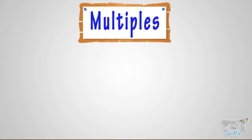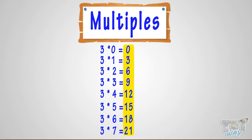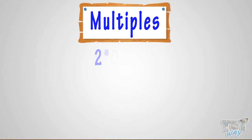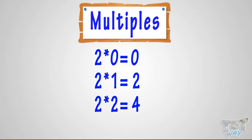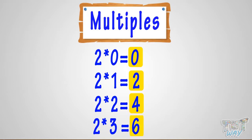Now let's learn what are multiples. Multiples of a number are numbers that come in its table, or numbers that result after multiplying the number with any number. Like, 2 multiplied by 0 equals 0; 2 multiplied by 1 equals 2; 2 multiplied by 2 equals 4. Here, 0, 2, and 4 are multiples of 2.